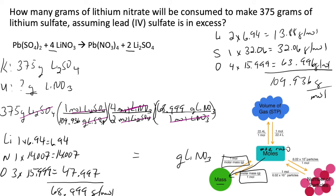To carry out the math: 375 times 4 times 68.994, divided by 109.936 times 2. Calculating all of this out gives 470.7 — I keep an extra digit to allow for rounding to significant figures. Looking at my sig figs, I have three, so the answer is 471 grams of lithium nitrate. Remember that numbers used in conversion factors are considered infinite and do not count toward sig figs — only measured values do. In this case, only the 375 grams of lithium sulfate counts, giving us three significant figures. And this would be our answer.